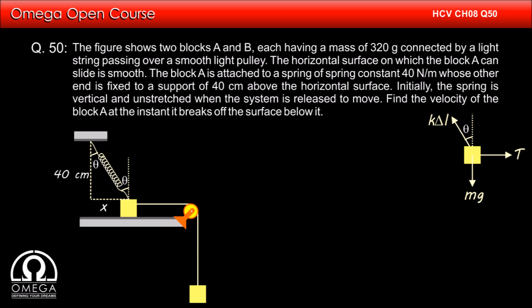Since the block is about to break off from the surface, the vertical component of the spring force must balance the gravitational force acting on it. Therefore, K delta L cos theta is equal to mg.